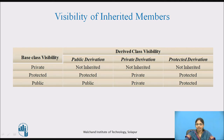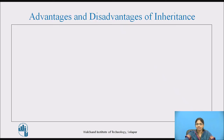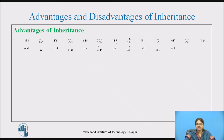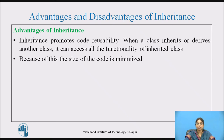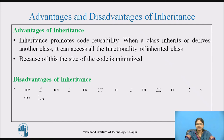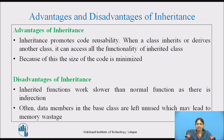This table shows the visibility of inherited members under different modes of derivation. Try to think and answer: what are the advantages and disadvantages of inheritance? Advantages: inheritance promotes code reusability — when a class inherits another class, it can access all functionality of the inherited class, minimizing code size. Disadvantages: inherited functions work slower than normal functions due to indirection, and unused data members in the base class may lead to memory wastage.